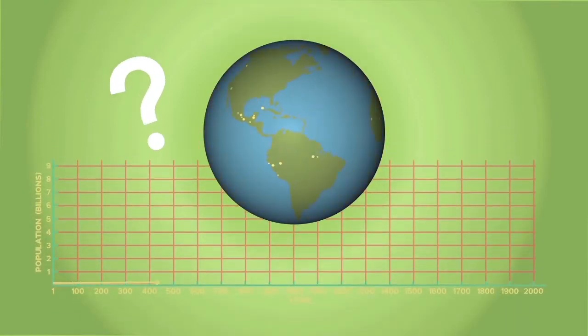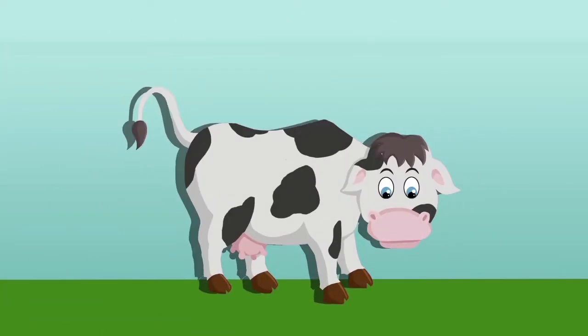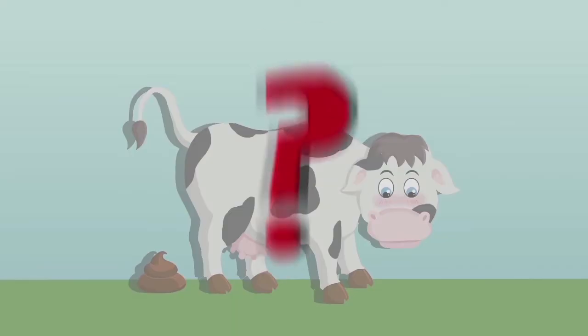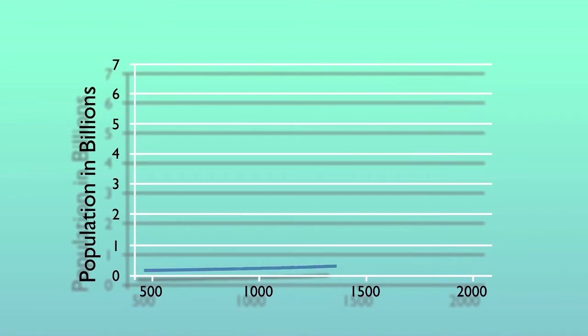Have you ever wondered about how the human race got to 7 billion people? Have you ever wondered what bats, the First World War and manure have got to do with one another? No? Well, if you haven't, have a look at this graph.